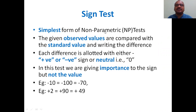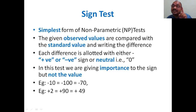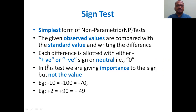The Sign Test is the simplest form of non-parametric tests. The observed values are compared with the standard value — both will be given in the problem. We find the difference between the observed value and the standard value. Each difference is allotted either a positive sign, negative sign, or neutral zero. In this test we give importance to the sign — positive or negative — but not to the magnitude of the value.